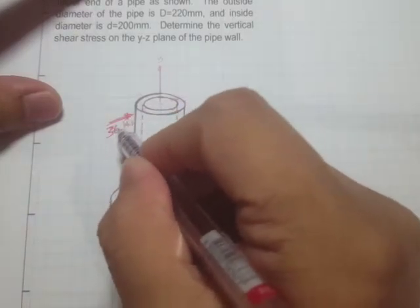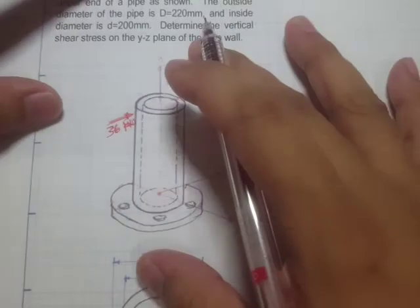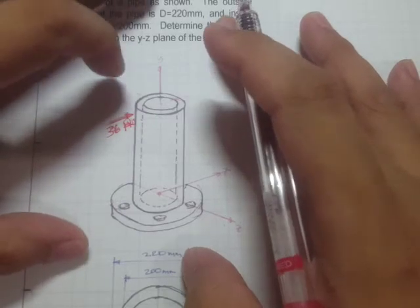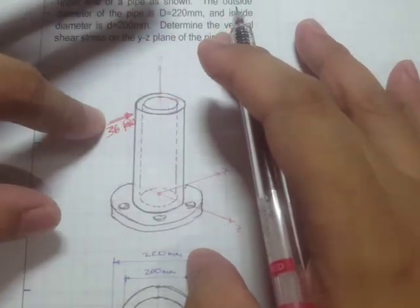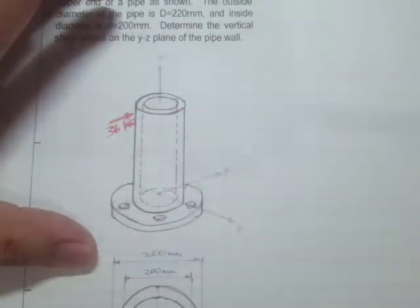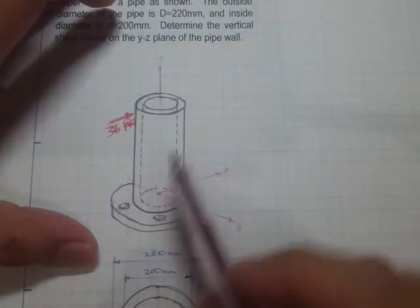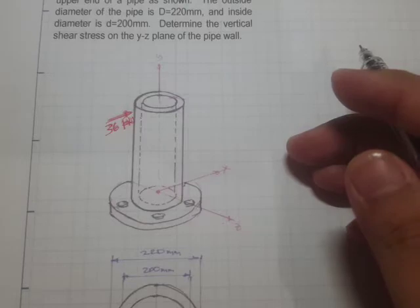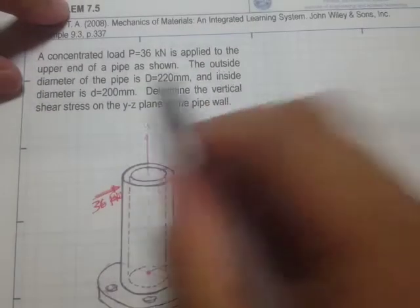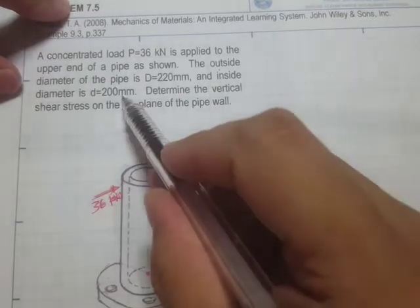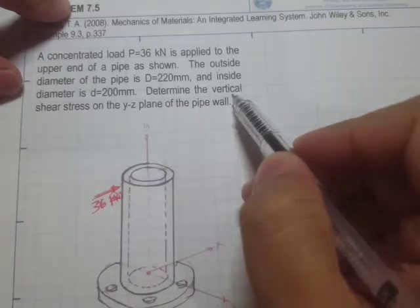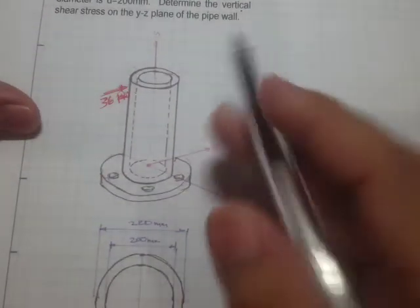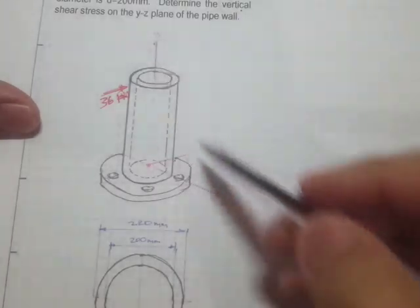Even though the load is oriented in the vertical direction, this member is experiencing flexural loadings. Therefore, the analysis will be a flexural analysis. The outside diameter of the pipe is 220 mm and the inside diameter is 200 mm. We need to determine the vertical shear stress on the yz plane, where we have the x, y, and z axes.